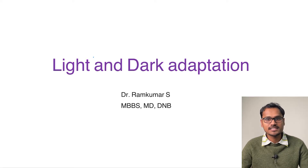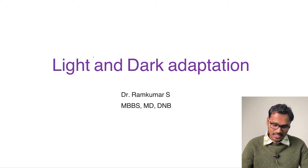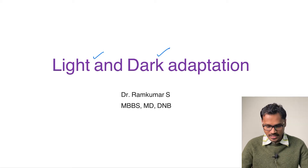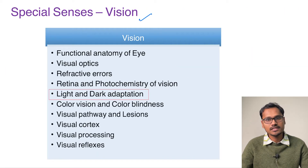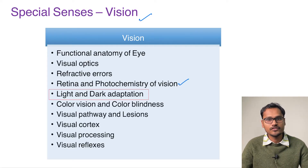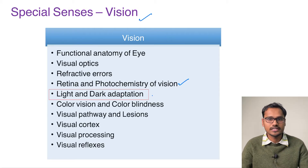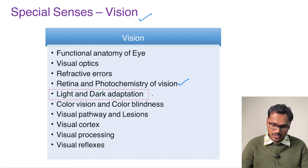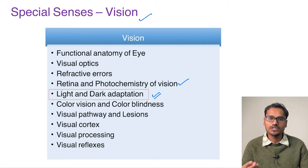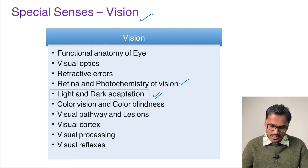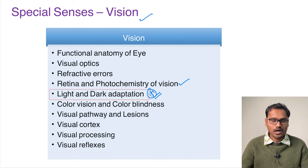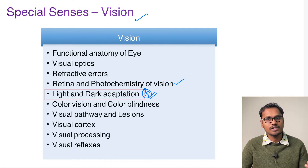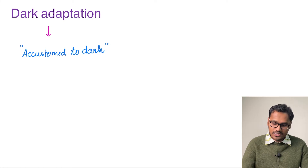Hello everyone. In today's special senses class we are going to discuss light and dark adaptation. In our discussion of special senses, under vision, in the last session we discussed the photochemistry of vision — how rods and cones have their photo pigments getting activated and how it is perceived. Today we will discuss a concept close to the rods and cones and their different properties: dark and light adaptation — how the cones and rods get adapted to dark and light environments.